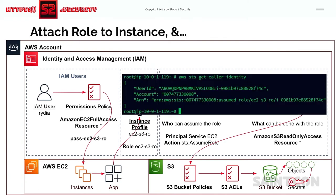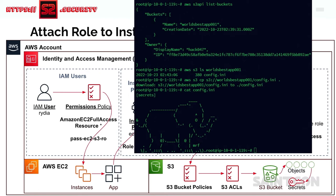Once the role is attached to the EC2 instance, running `aws sts get-caller-identity` shows you're authenticated as the role called EC2-S3-ReadOnly. From there, you can list S3 buckets, look at objects inside them, copy them back locally, and read their contents.